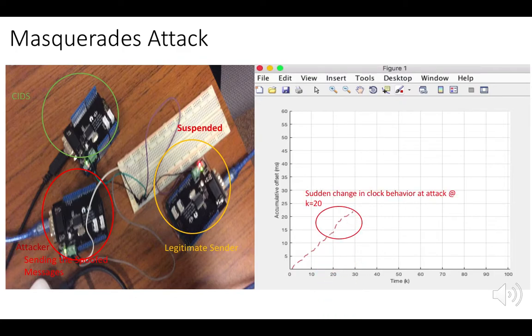We can see in the plot that there was a sudden change in clock behavior at K equals 20, which represents a deviation from normal clock behavior, indicating some abnormality in the network.